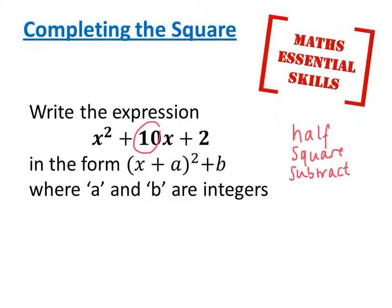It's actually this number here. We half that number, and that's 5, so I know that the first letter I'm looking for is 5. Then I square the number, 5 squared is 25.